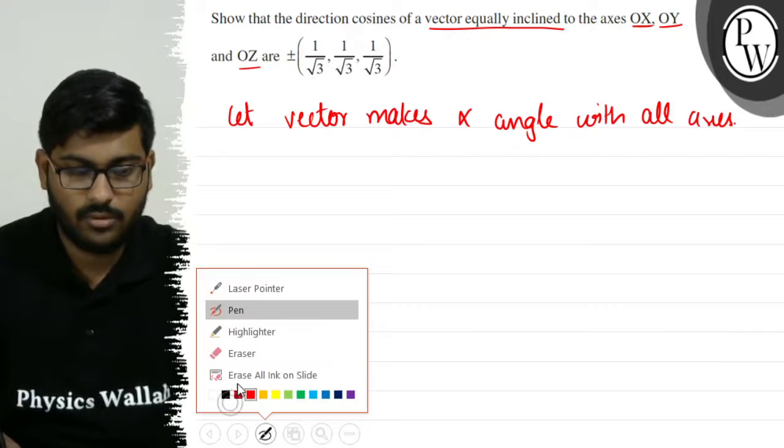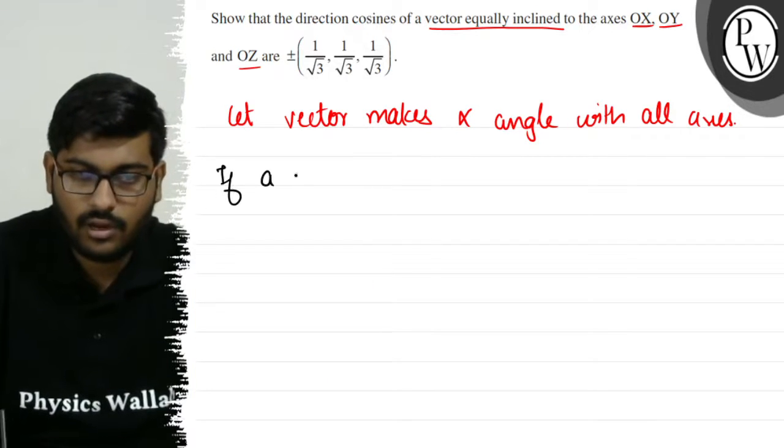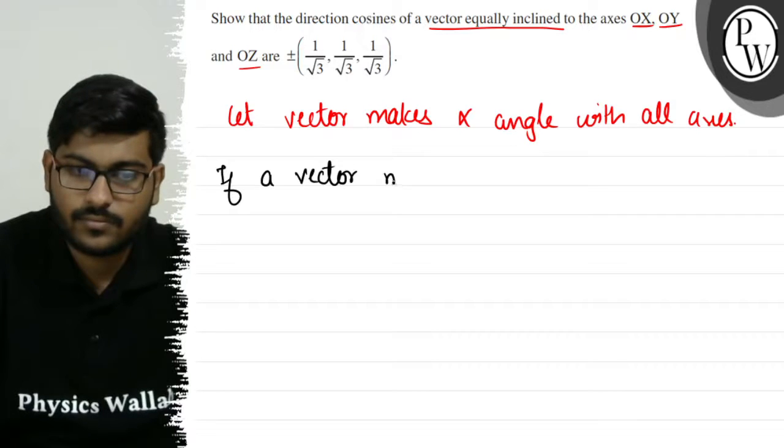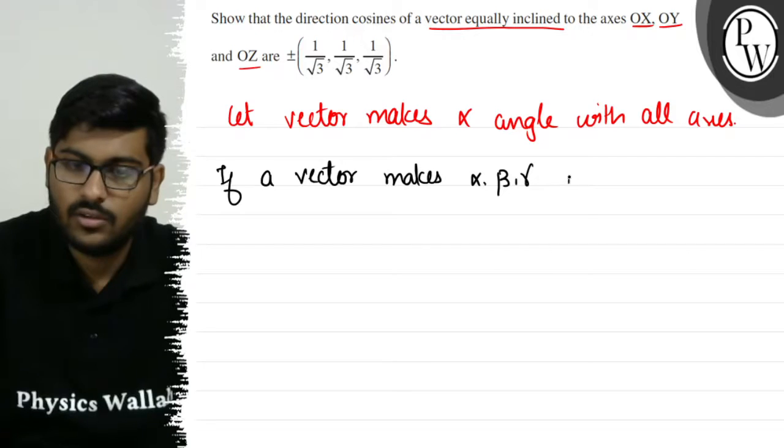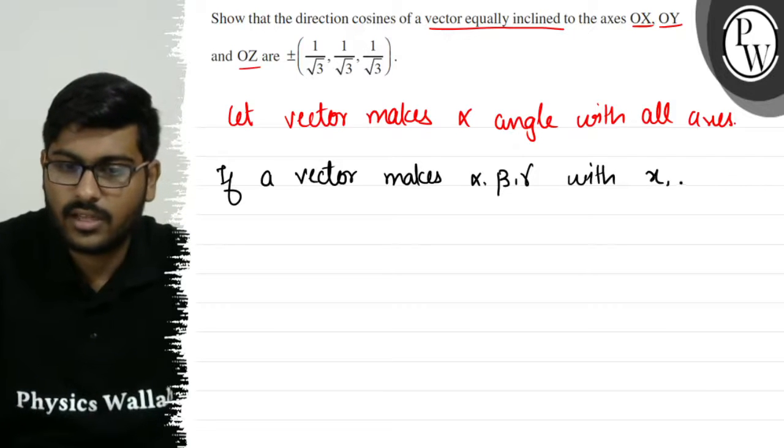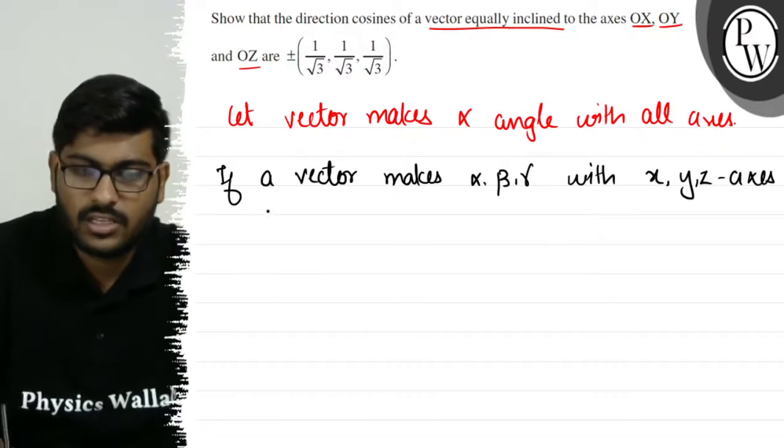Now we know that if a vector makes alpha, beta, gamma angles with x, y, z axes respectively.